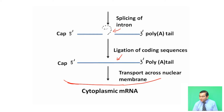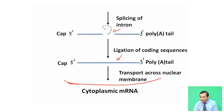After splicing of the intron, ligation of the coding sequence occurs — that is, exon 1 and exon 2 are joined together. The mature mRNA is then transported across the nuclear membrane, and this cytoplasmic mRNA is ready for protein synthesis. This is the basic diagrammatic representation of how post-transcriptional modification occurs.